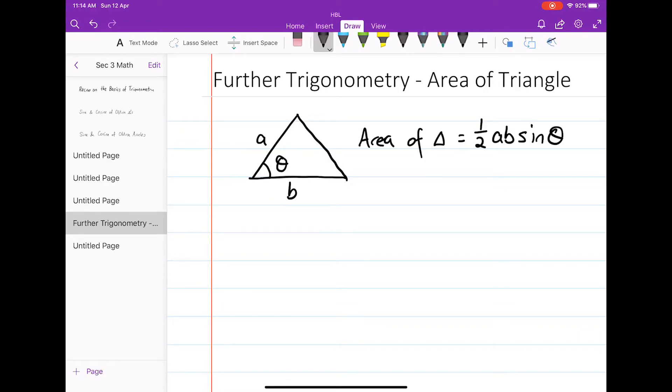This formula will also work for an obtuse angle. For example, if I have a triangle over here, the angle here is theta, an obtuse angle. Length here is A, over here is B.